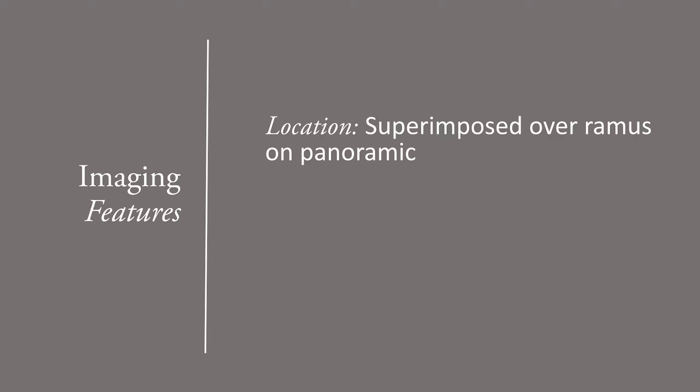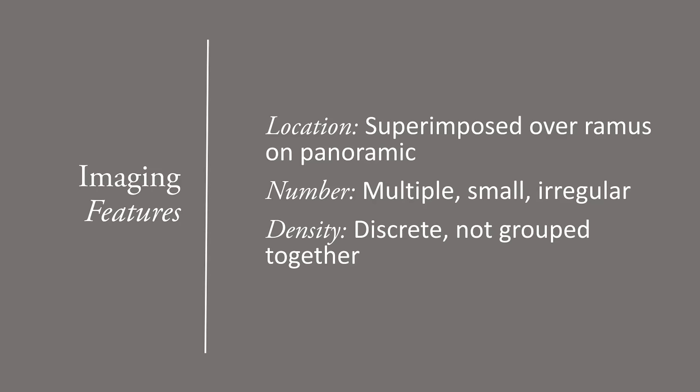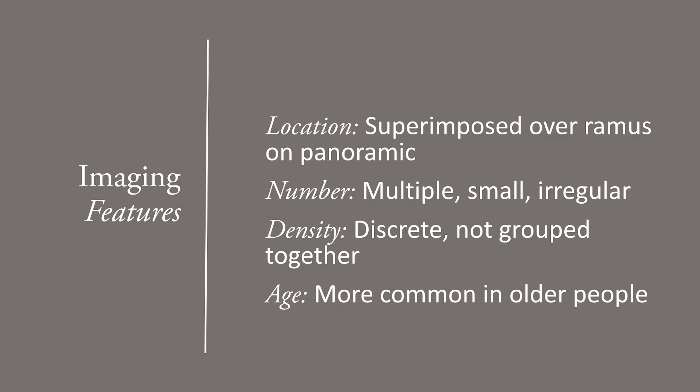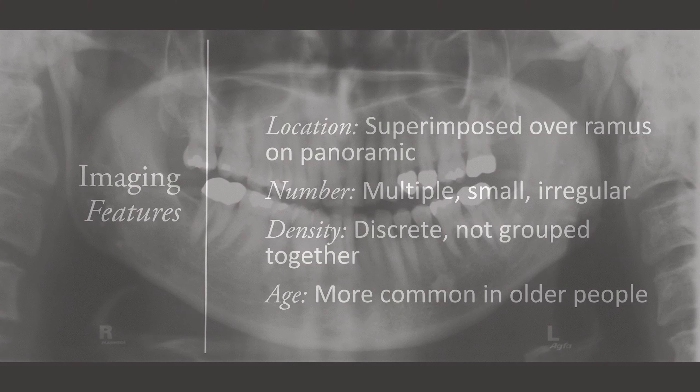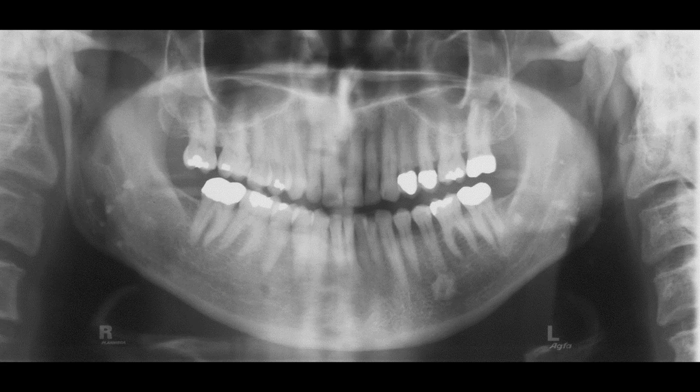Let's review the tonsillar calcifications. The location is critical for diagnosis. Tonsillar calcifications can be seen superimposed over the ramus on a panoramic radiograph. Some of these calcifications are located distal to the ramus. On the CBCT scan, we'll see that the calcifications are on the lingual aspect of the ramus. Tonsillar calcifications are multiple, small, and irregular in size and shape. These calcifications are discrete and not grouped together. They are typically seen in elderly people.